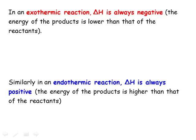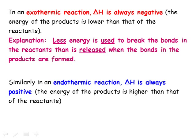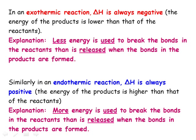We can explain this in terms of bonds broken and made. In an exothermic reaction, delta H is always negative, because less energy is needed to break the bonds in the reactants than the amount of energy that is released when the bonds in the products are formed. Conversely, for an endothermic reaction, delta H is always positive, because more energy is needed to break the bonds in the reactants than the energy that is released when the bonds in the products are formed.